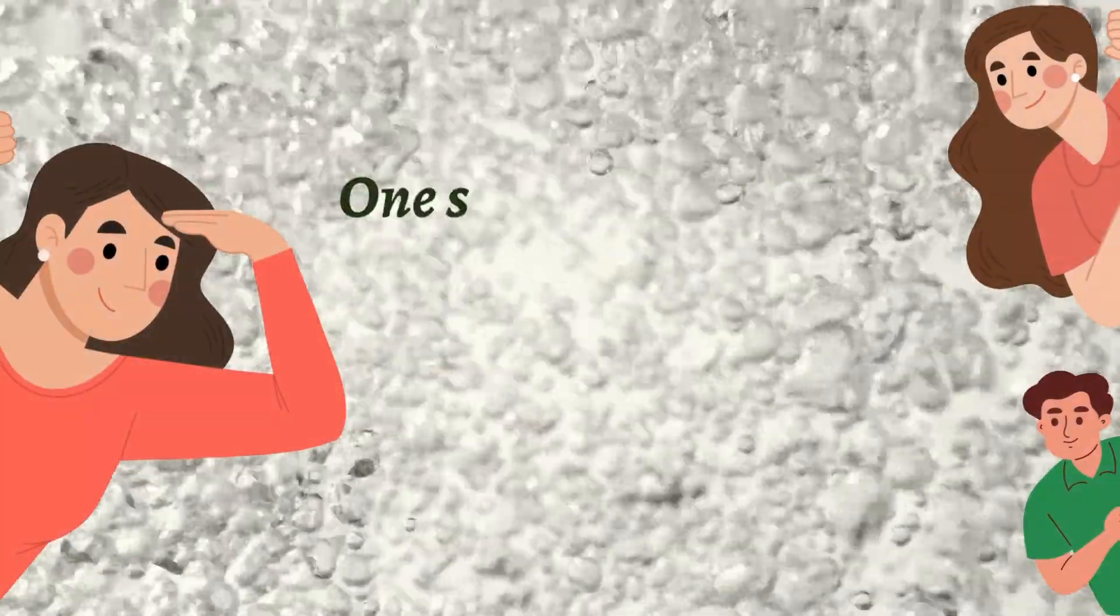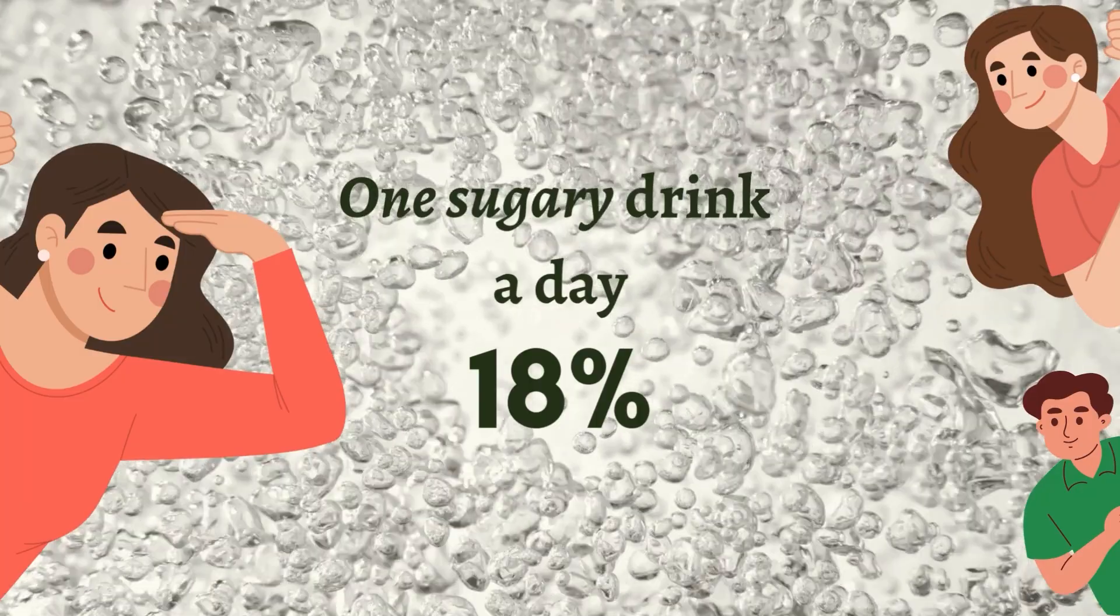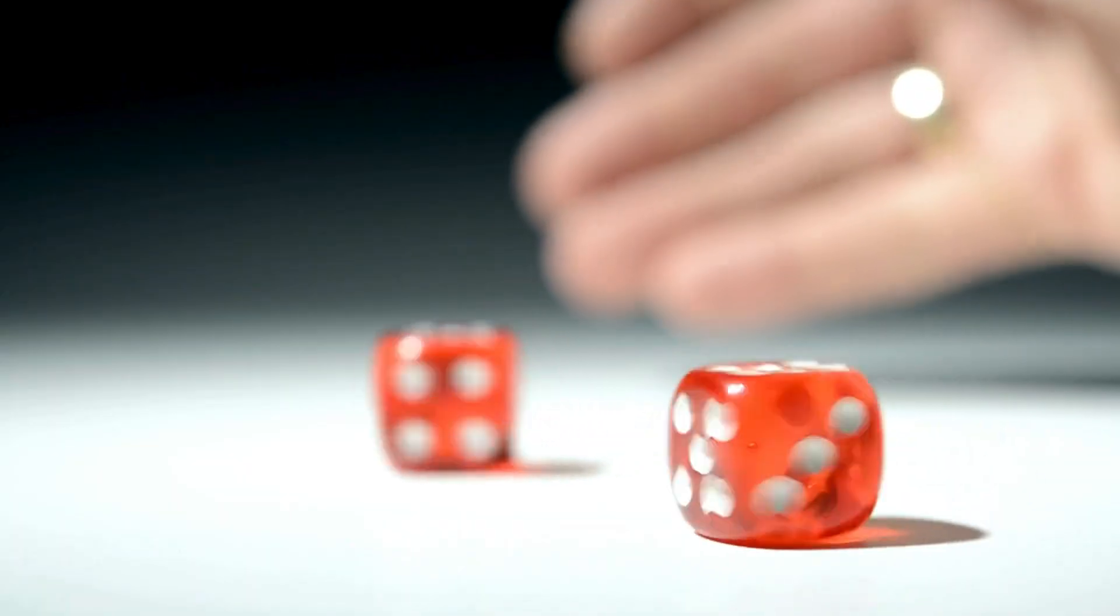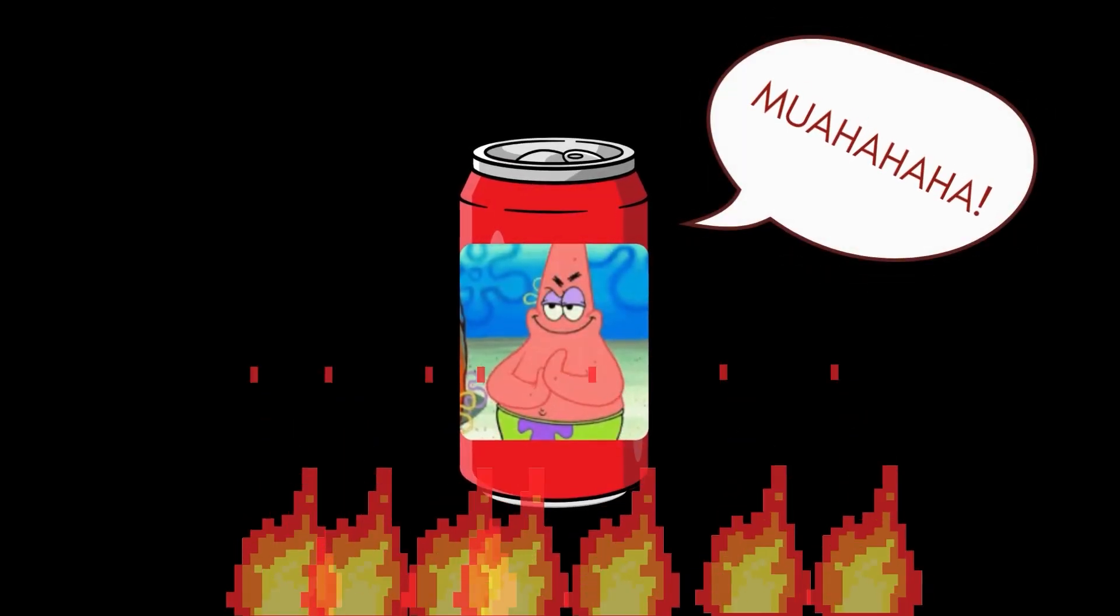Did you know that studies suggest that one sugary drink a day can increase your risk of diabetes up to 18%? That's almost like rolling a six-sided die and hoping it doesn't land on diabetes. Still too big a gamble for a can of soda, right?